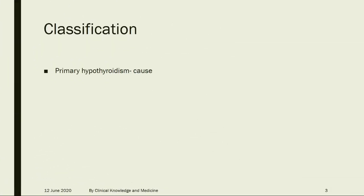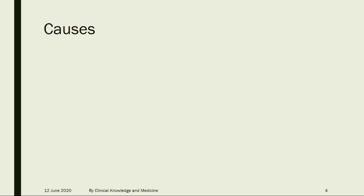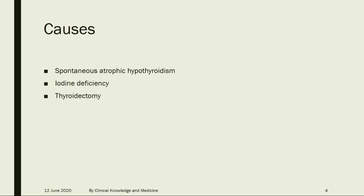Classification: Primary hypothyroidism is caused within the thyroid gland itself. Secondary is due to failure of TSH. Causes include spontaneous atrophic hypothyroidism, iodine deficiency, thyroidectomy, Hashimoto's thyroiditis, and radiation.